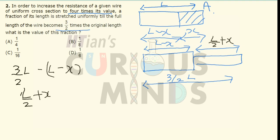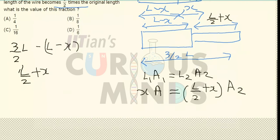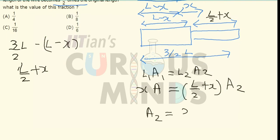The length of the right-hand section after stretching is L/2 plus X. Using the relation L1·A1 = L2·A2, the original length of the right section is X with area A, and after stretching its length is L/2 plus X. So A2 equals X times A divided by (L/2 plus X). This is the new area of the stretched wire section, which we will use later.